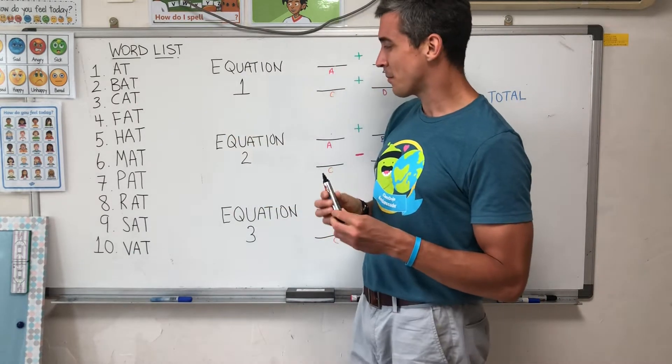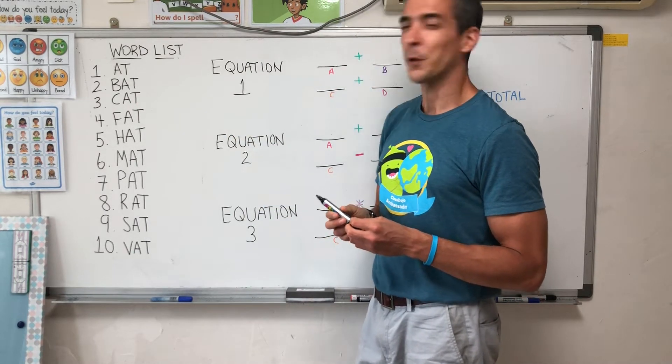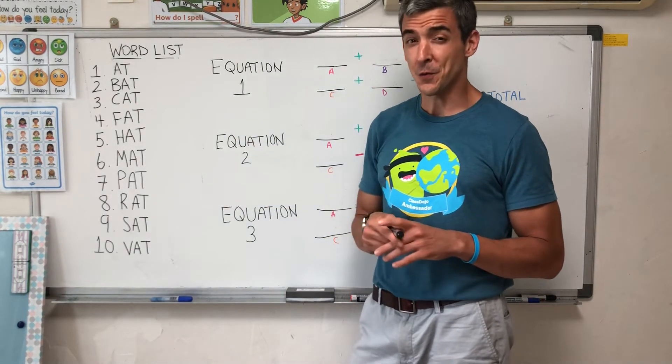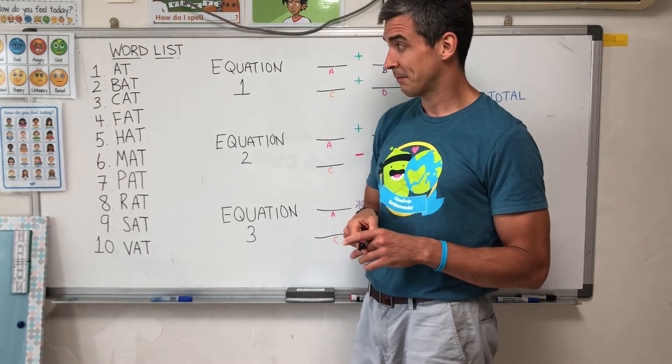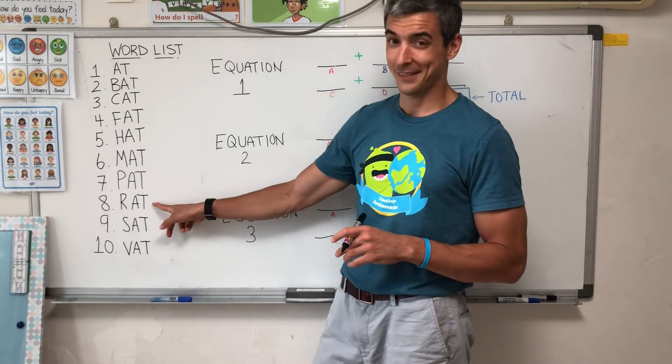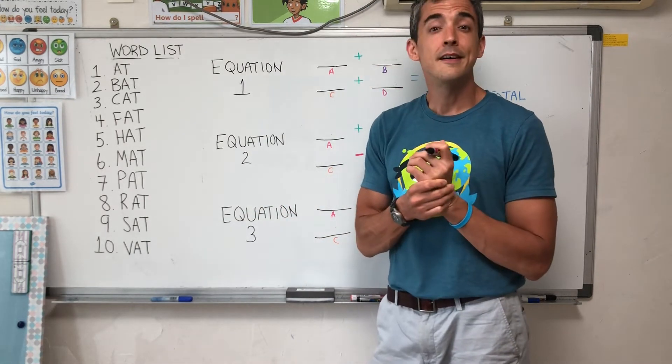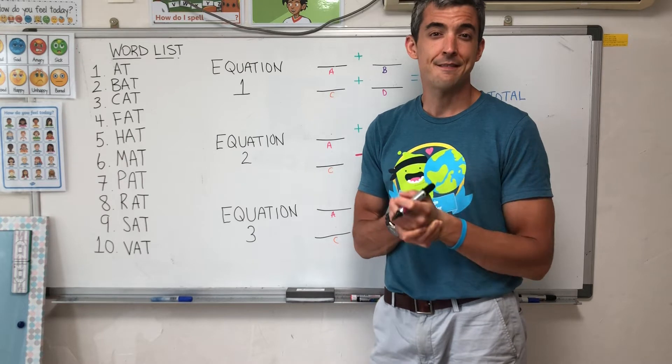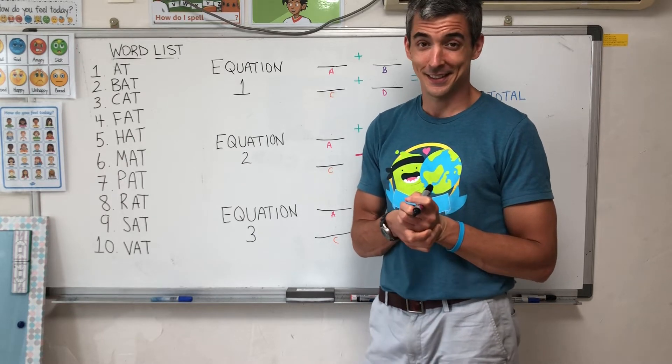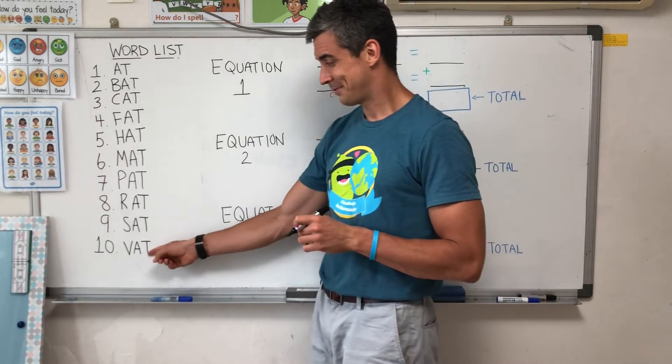Next, what number is r, r, rat? Number eight. Okay, last one. Let's practice. What number is v, v, v, vat? It's number ten.